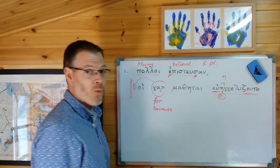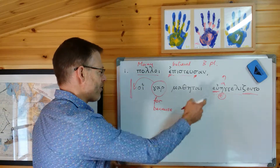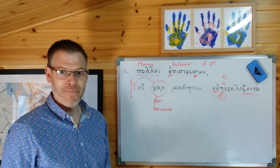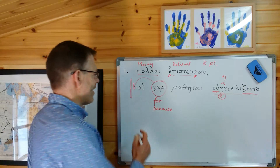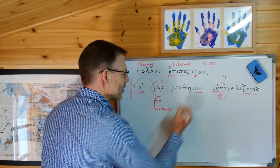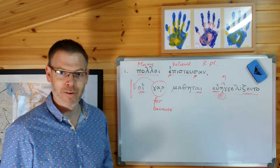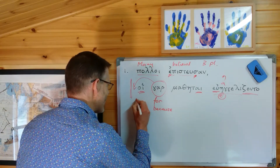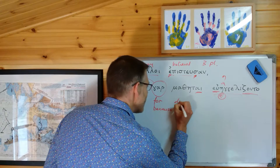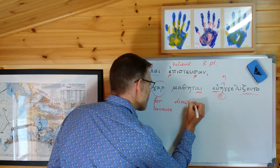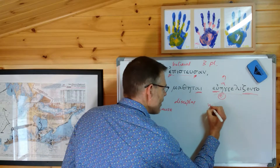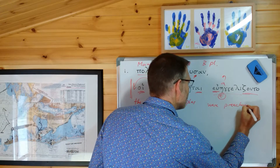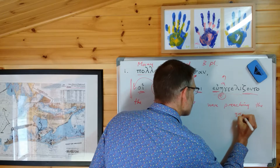They - third person plural - were preaching the gospel. Who was preaching the gospel? Hoi mathetai. An unusual noun, because it's actually masculine but it looks feminine - see the video from a few sessions ago on nouns of confusing gender. So that means the disciples were preaching the gospel.